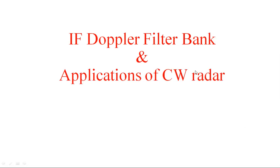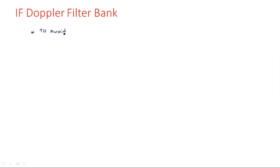In this video I am going to explain about IF Doppler filter bank and applications of CW radar. IF Doppler filter bank — in the receiver part of CW radar we have an IF amplifier. This IF amplifier has been intentionally added to avoid flicker noise. We have added an intermediate frequency IF amplifier, and the IF frequency plus the Doppler frequency are added up so that the input frequency of the receiver is higher, and the flicker noise can be avoided.